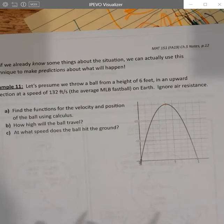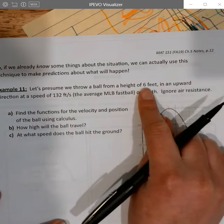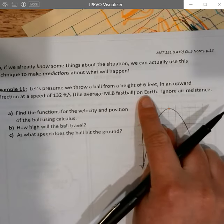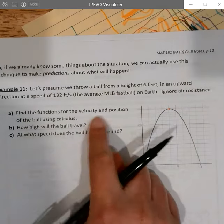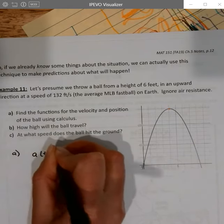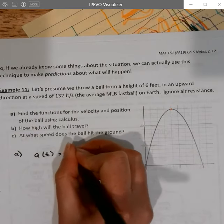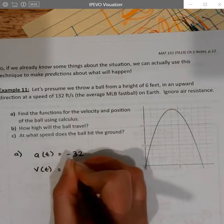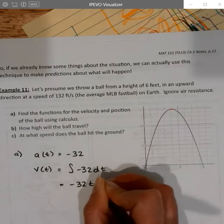So if we already know some things about the situation, we can actually use this technique to make predictions about what will happen. Let's presume we throw a ball from a height of 6 feet in an upward direction at a speed of 132 feet per second, the average of a fastball. On Earth, and we're going to ignore air resistance. So find functions for velocity and position of the ball using calculus. So I actually, for part A, first want to declare my acceleration function, even though they really asked me for velocity, because I need to know the gravitational constant. Notice that we're measuring things in feet, and so we're going to use the negative 32 feet per second per second for our acceleration function.